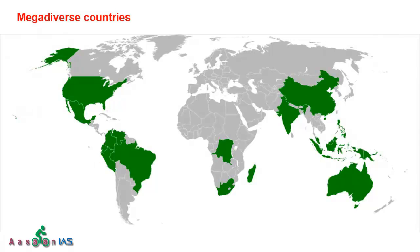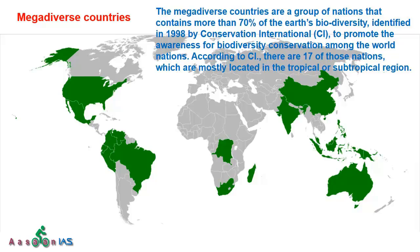There are certain countries where biodiversity is very high — these are called mega diverse countries. Conservation International, an NGO, identified 17 countries as mega diverse countries in 1998. These 17 mega diverse countries together support more than 70% of the world's biodiversity.